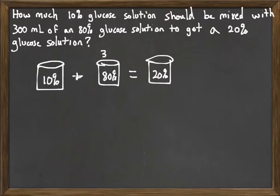So now, we know, as we did in the previous problem, how much we have of one of the things. We have 300 milliliters of the 80% solution. We do not know how much 10%, so we can mark that with an X or whatever variable you want.